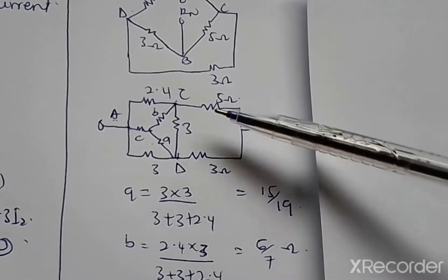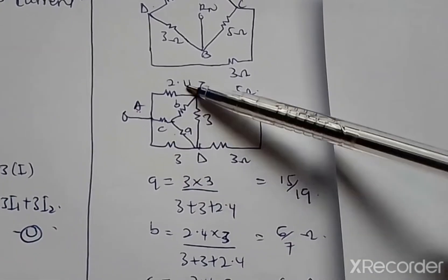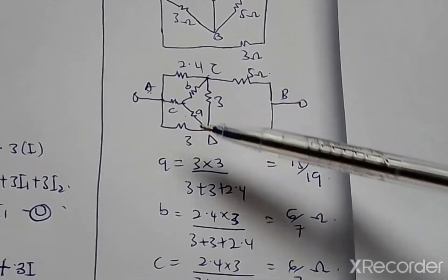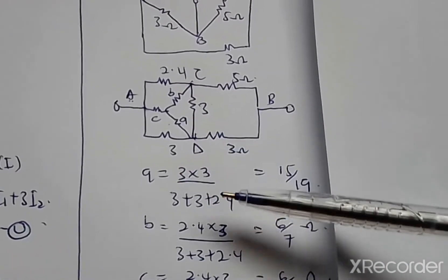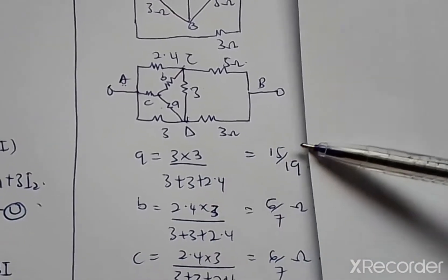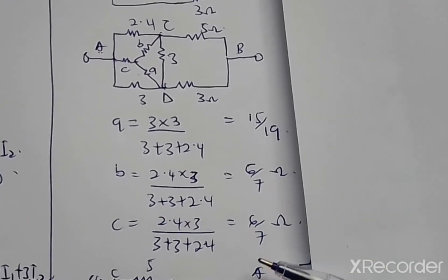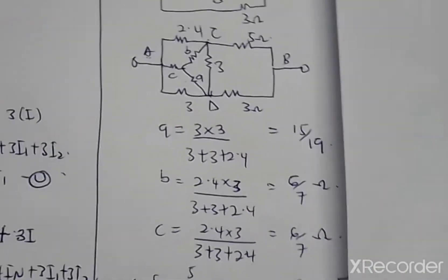Once you get this you apply the delta-star transformation since none of them are in series or in parallel. From here you have A, B, C, so you find a value for A, value for B, and value for C. Value for A is 3 times 3 over the sum of other resistances. You also have the value for B and the value for C.